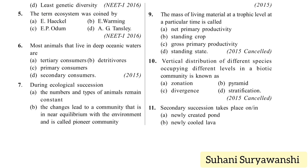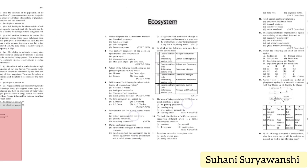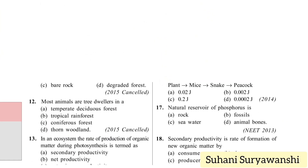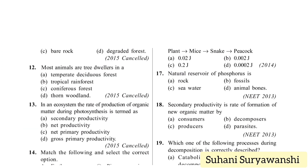Secondary succession takes place on or in: a newly created pond, newly cooled lava, bare rock, or degenerated forest. The correct answer will be degenerated forest, because it is secondary succession — there was previous vegetation.